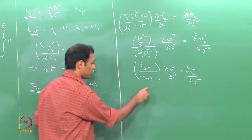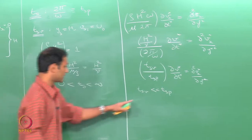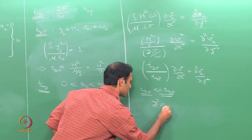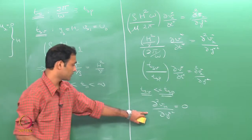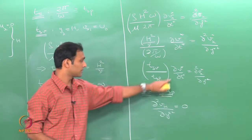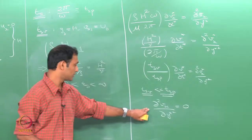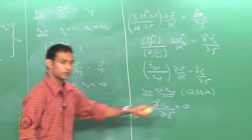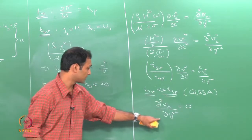We can neglect the left-hand side only under the condition that Tsv is much less than Tsp. If this condition is satisfied, we could neglect the transient term and get the simplified equation ∂²vx*/∂y*² = 0. This governing equation has no ∂v/∂t term, meaning the problem is independent of time — this is the quasi-steady state approximation.